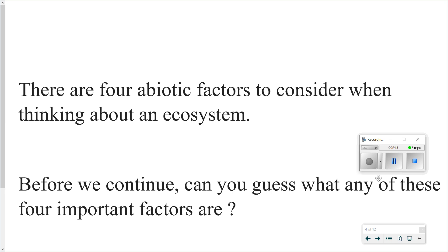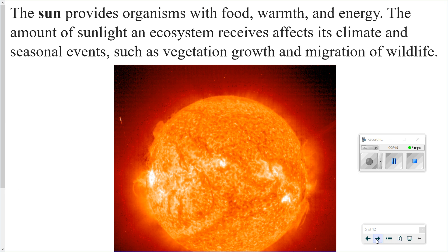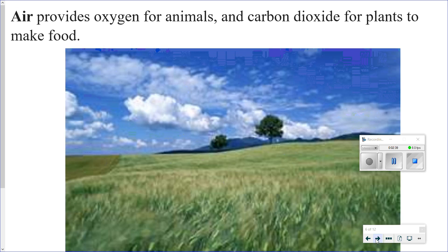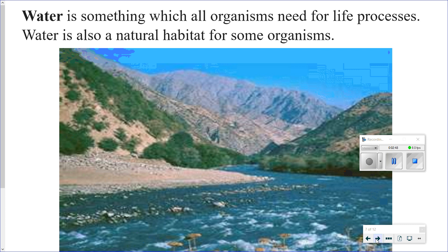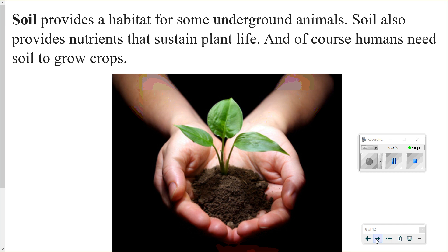Alright, let's see how you did. The sun provides organisms with food, warmth, and energy. The amount of sunlight an ecosystem receives affects its climate and seasonal events such as vegetation growth and migration of wildlife. Air provides oxygen for animals and carbon dioxide for plants to make food. Water is something which all organisms need for life processes, and water is also a natural habitat for some organisms. Soil provides a habitat for some underground animals, and also provides nutrients that sustain plant life. And of course, humans need soil to grow crops.